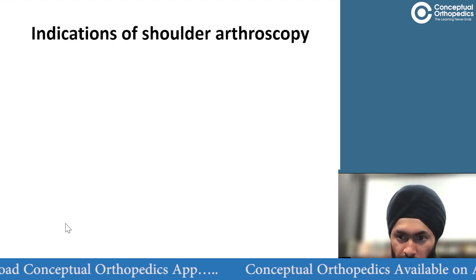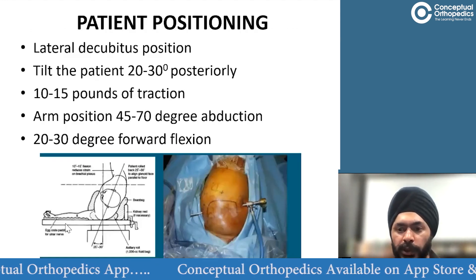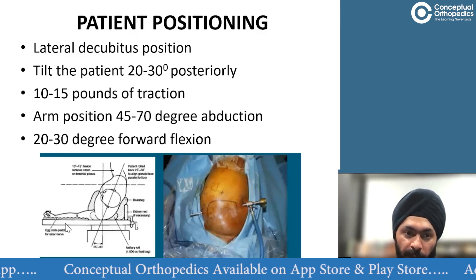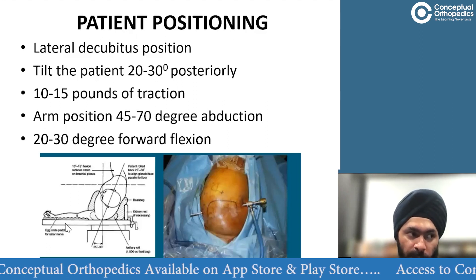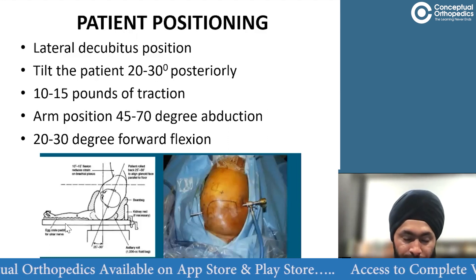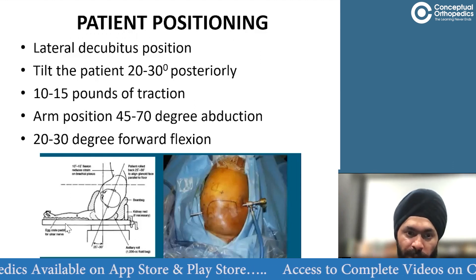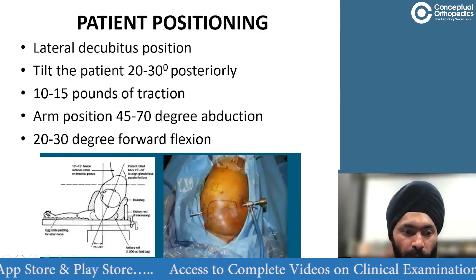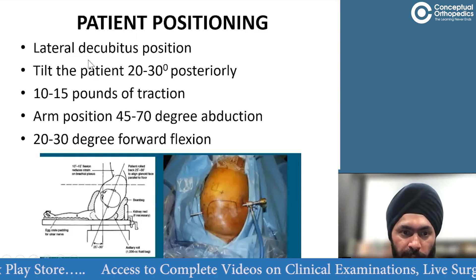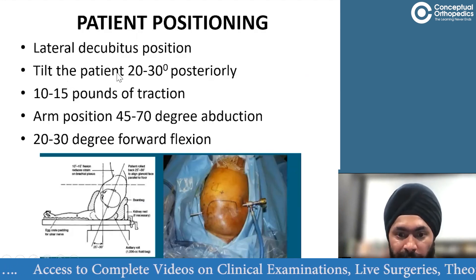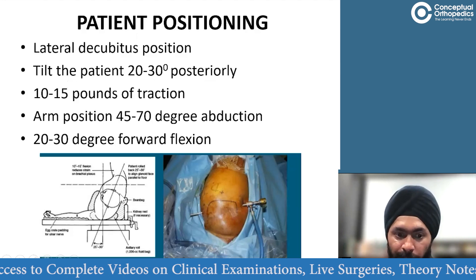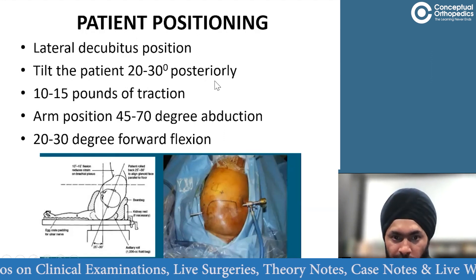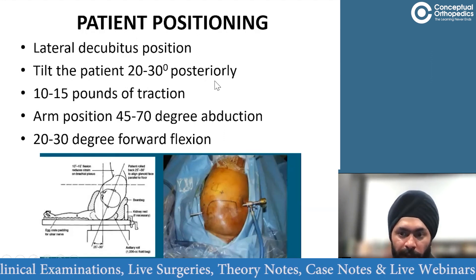Regarding patient positioning, there are two main positions used in shoulder arthroscopy depending on surgeon preference, training, and procedure. The two positions are lateral decubitus and beach chair. In lateral decubitus, it's not a direct full lateral — the patient is actually a 'floppy lateral' tilted 20 to 30 degrees posteriorly.